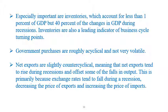Government purchases are roughly acyclical and not very volatile. Net exports are slightly counter-cyclical, meaning they tend to rise during recessions and offset some of the fall in output. This is primarily because exchange rates tend to fall during recessions, decreasing the price of exports and increasing the price of imports.